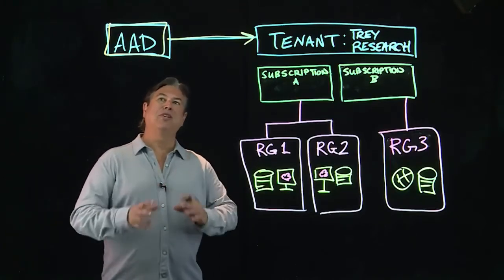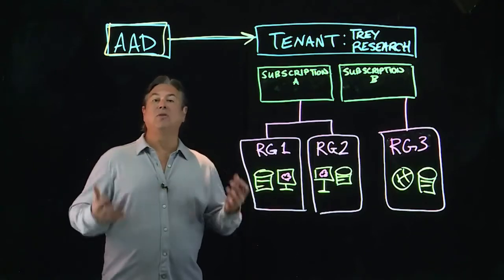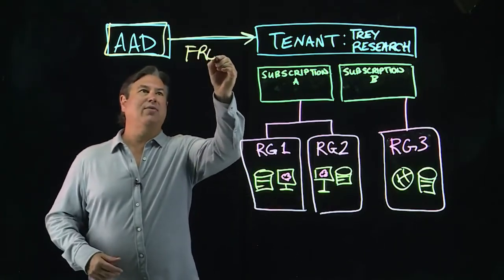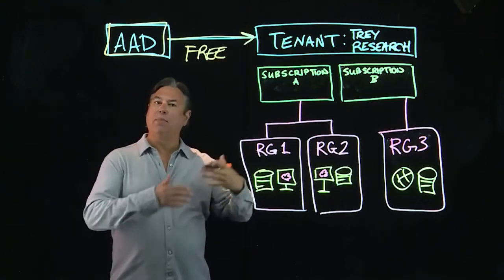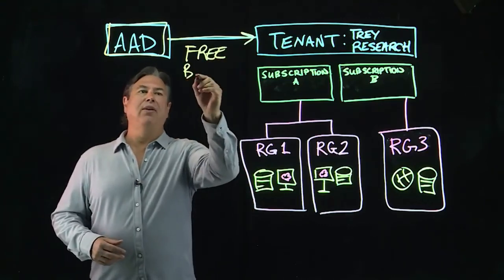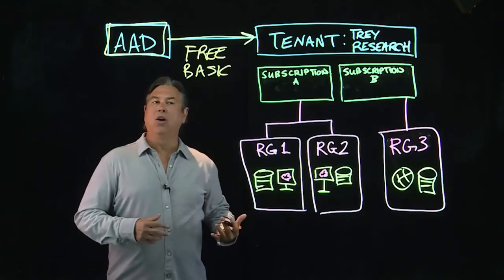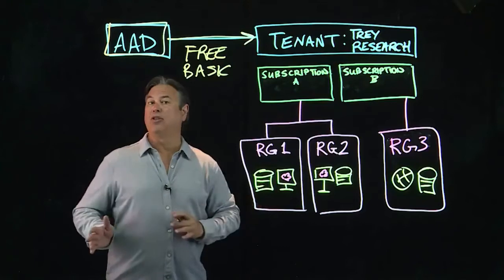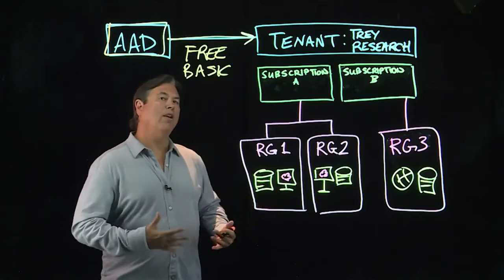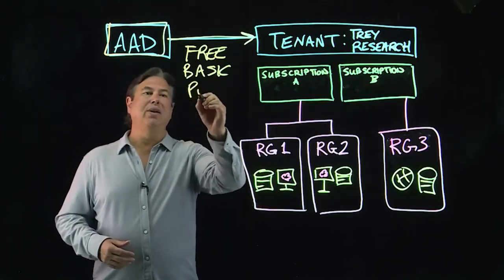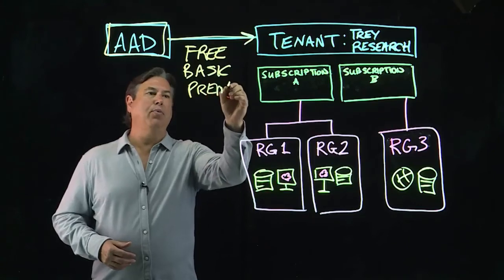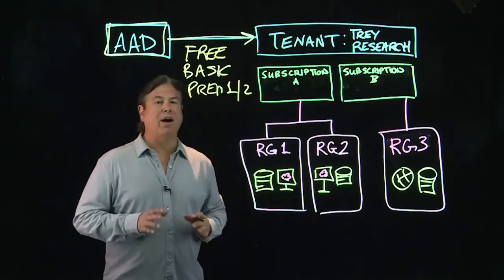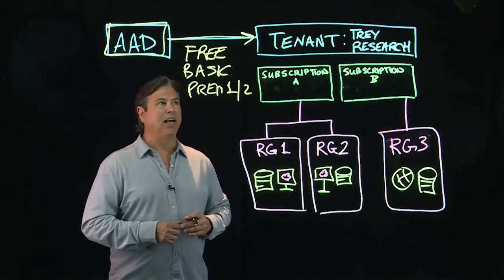Azure Active Directory comes in four different tiers. Most of you, when you're getting started, will use the free tier. Then you'll probably move up to the basic tier. For the exam, you can actually get by with just using the basic tier throughout the entire preparation process and not worry about going up to premium one or premium two tier. We'll talk more about those in upcoming sub-lessons.